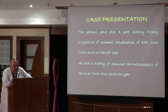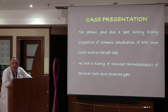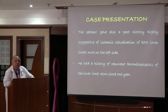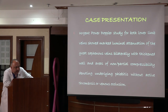The history showed findings highly suggestive of ischemic claudication regarding walking distance, and the patient also had a history of recurrent thrombophlebitis of the lower limb veins. So we are dealing with a disease affecting both the arterial and the venous system of both lower limbs.